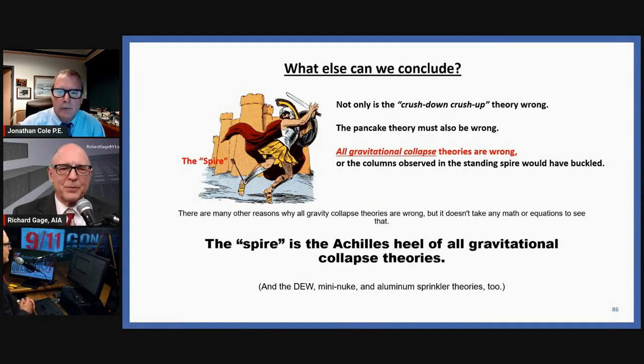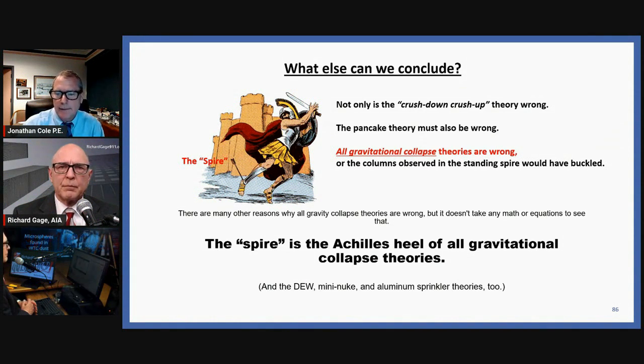Well, not only is the crush down, crush up theory wrong because it doesn't match experiment, nor does it follow Newton's laws, the pancake theory has to be wrong. In fact, all gravitational collapse theories are wrong. Whatever theory you come up with, if it's just gravity alone, it's got to be wrong. Or the columns that we observed in those standing spires would have buckled. Something would have bent. It didn't. It stood straight.